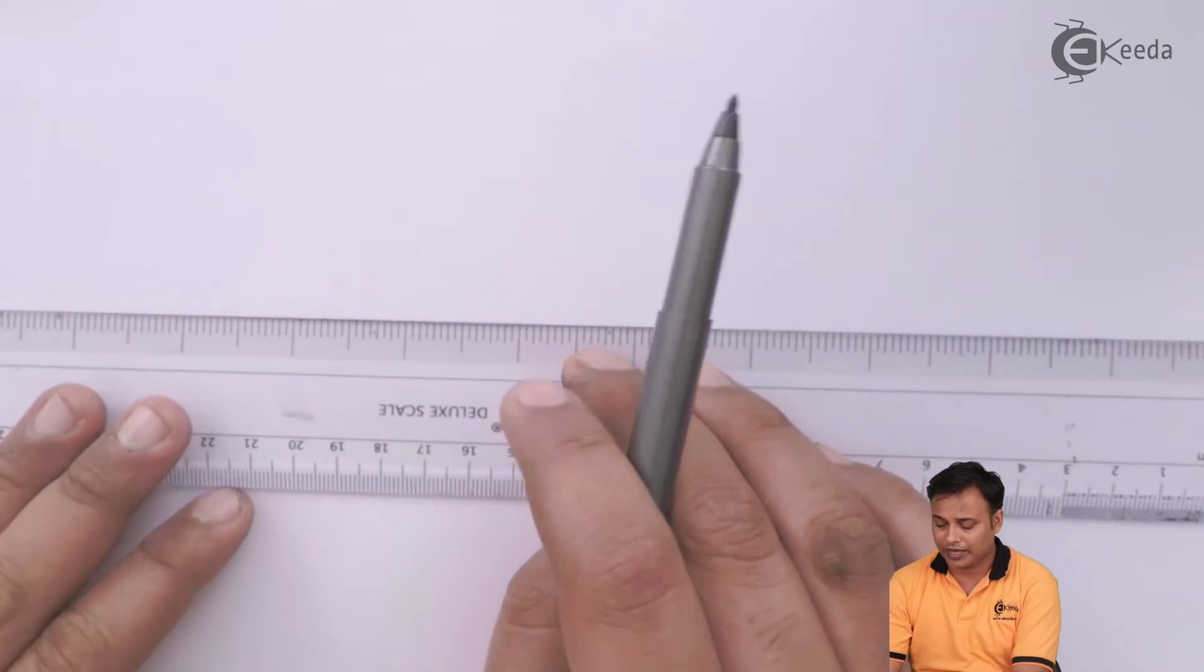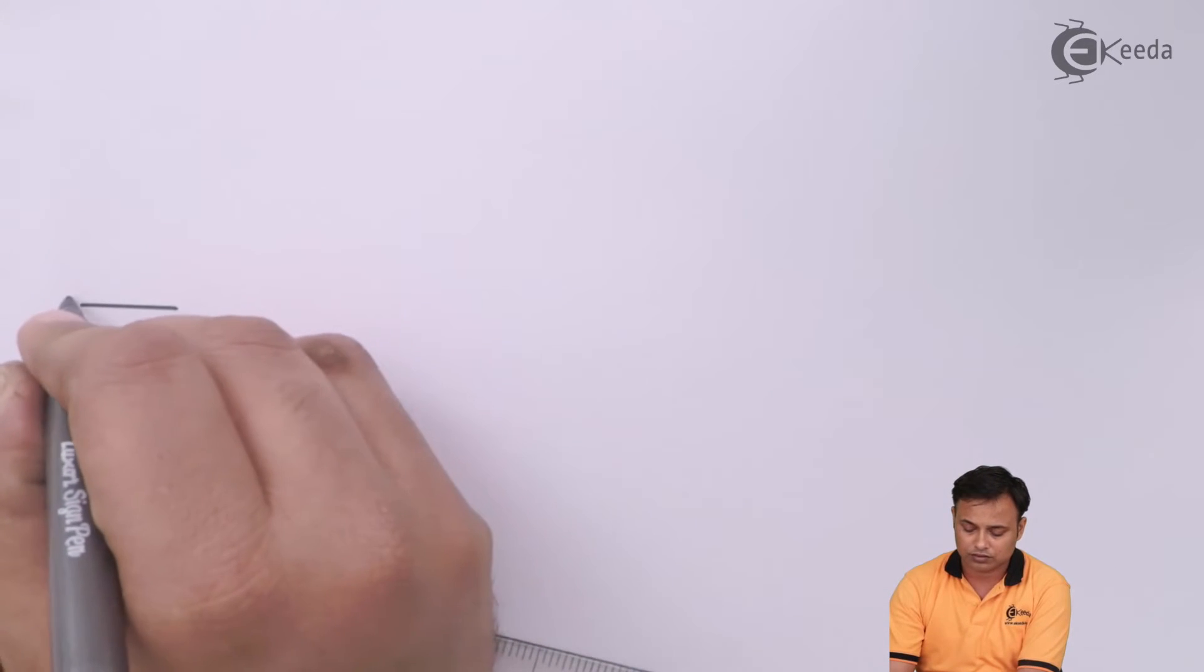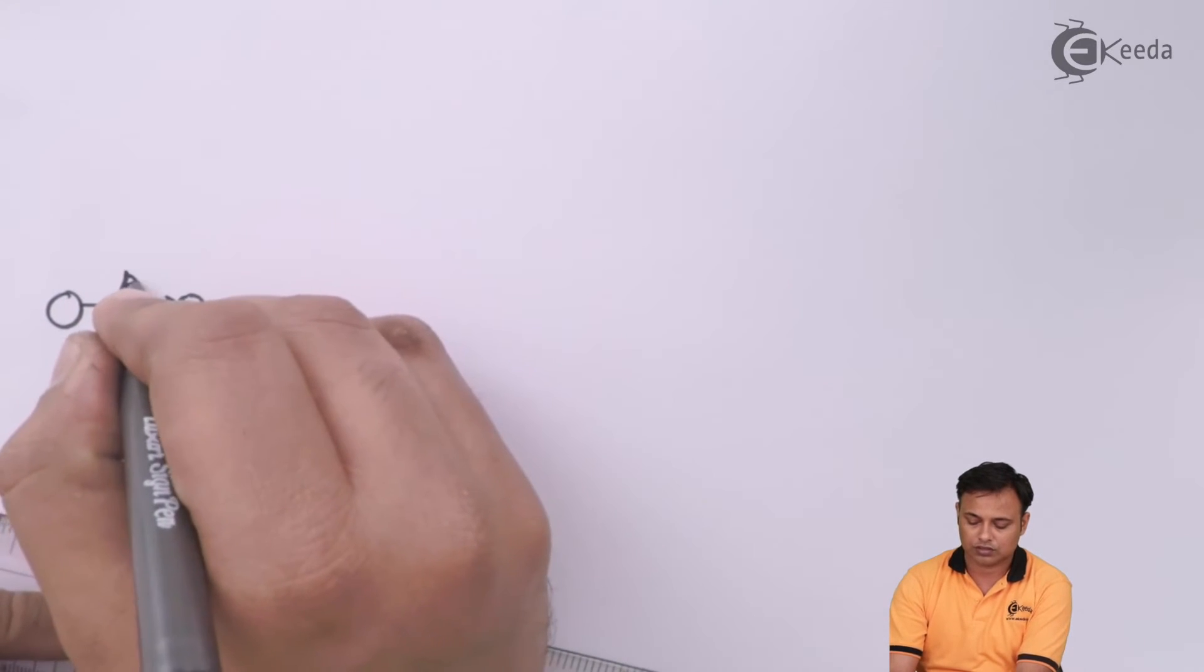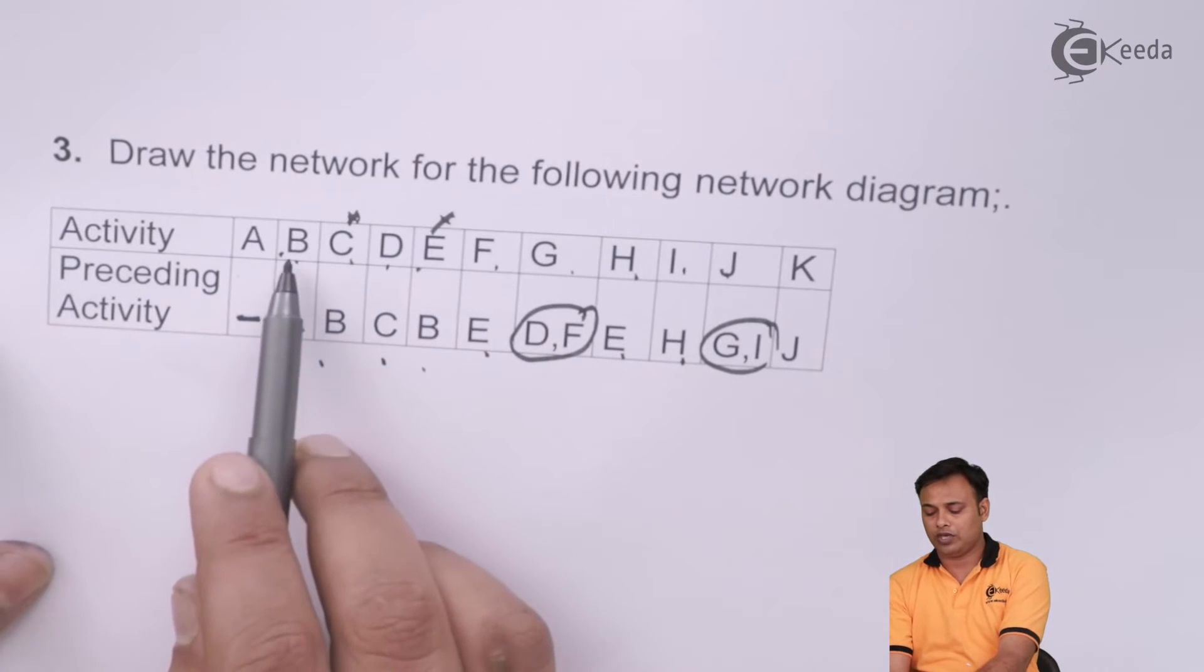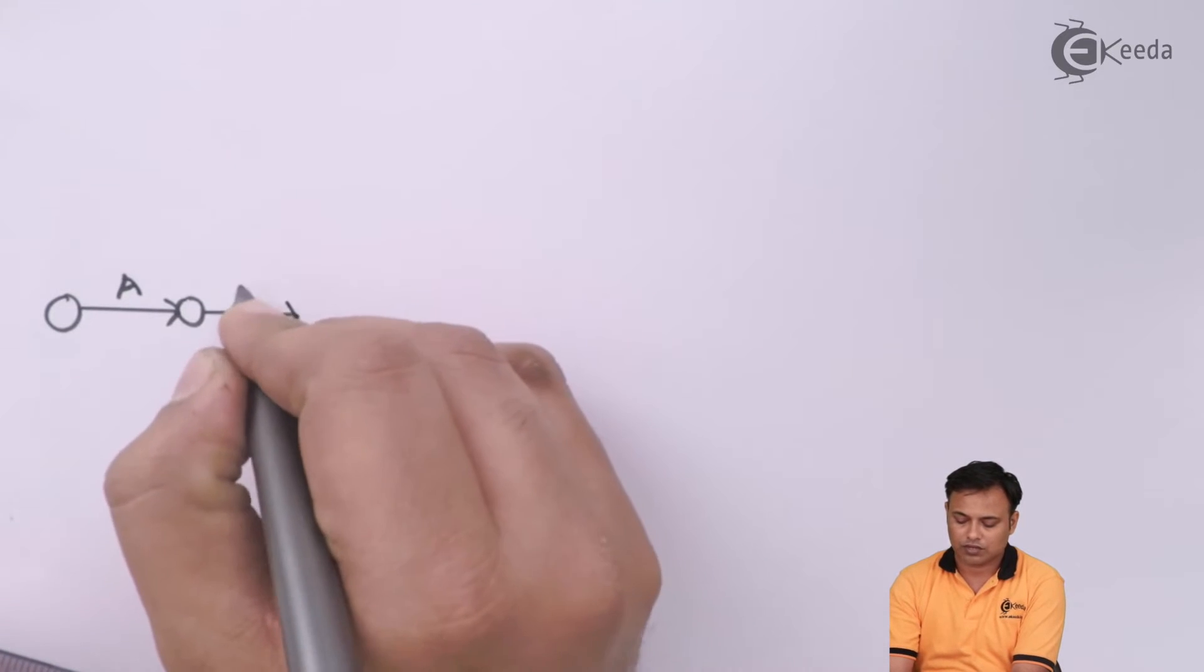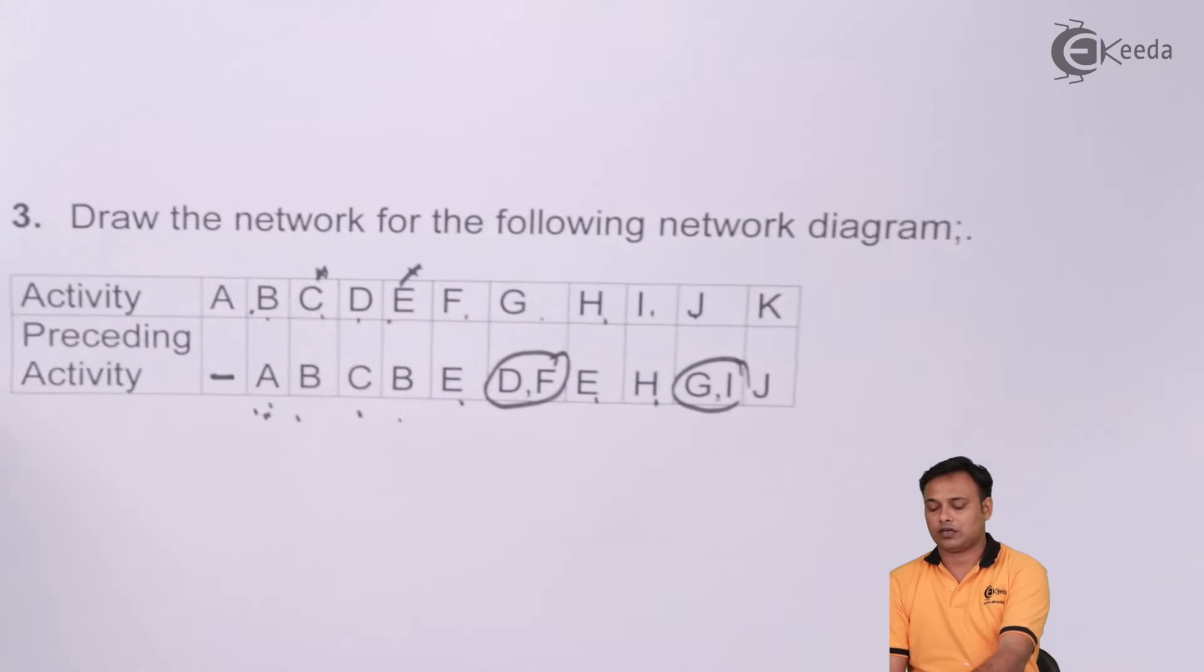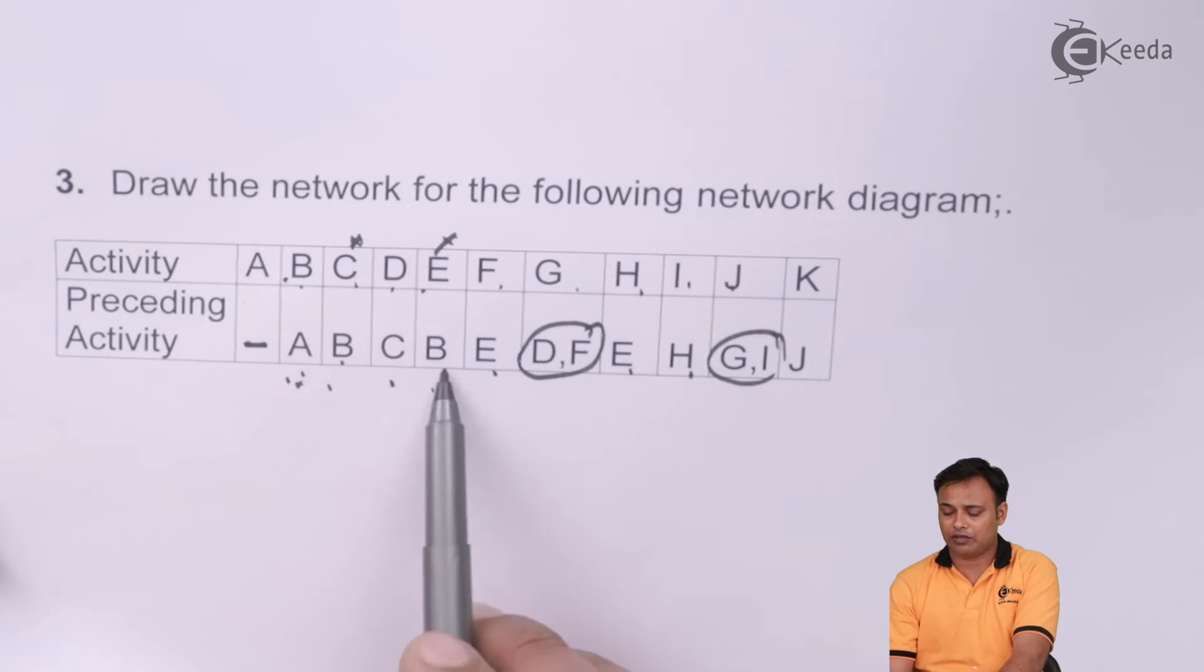First I will draw my network diagram, initial activity that is activity A. So after A I have got B. After A we have got activity B.